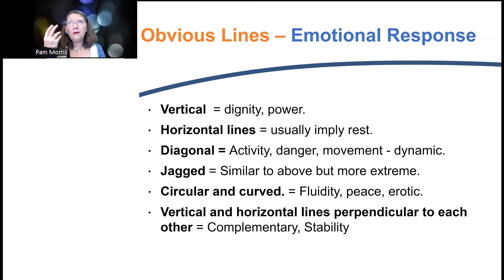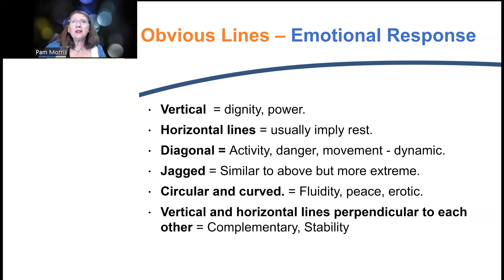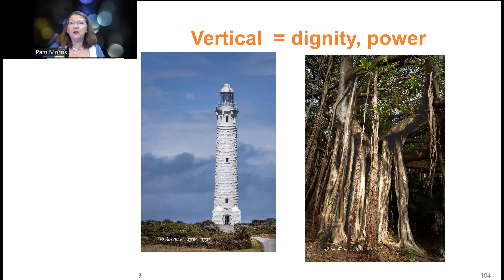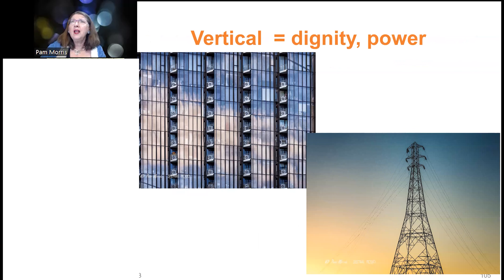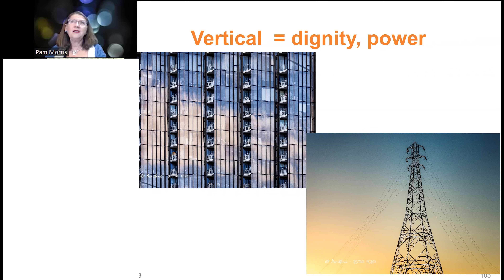By including these lines within our images, we add a communication layer for the viewer that adds an extra wow to the image. These are examples of strong vertical lines that give dignity and power — you can see they add to the aesthetics. There are lots of additional things in each of these images that add to the aesthetics, which we'll look at later, such as rhythm, tone, and harmonious color, but those strong vertical lines are the strongest part of the image.